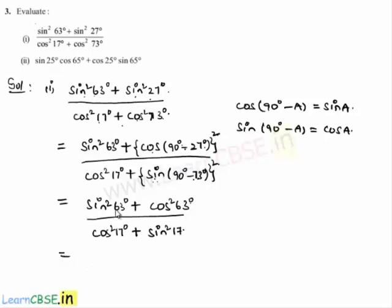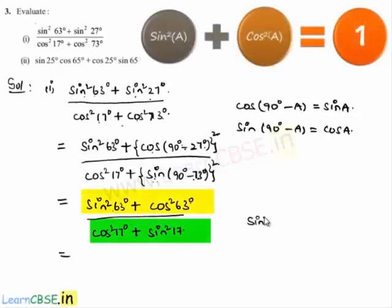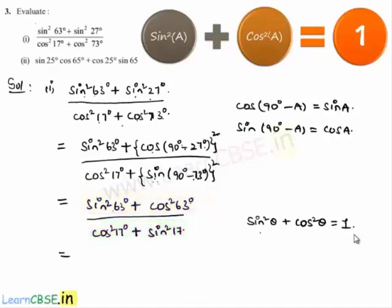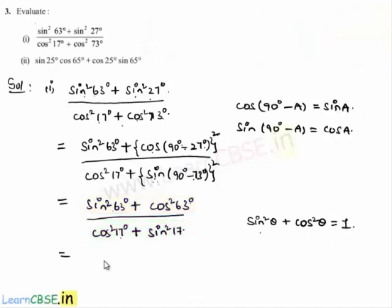Now the numerator is in the form sin square theta plus cos square theta, and so is the denominator. We know from the identity that sin square theta plus cos square theta equals 1. Substituting, the expression becomes 1 divided by 1, which is equal to 1.